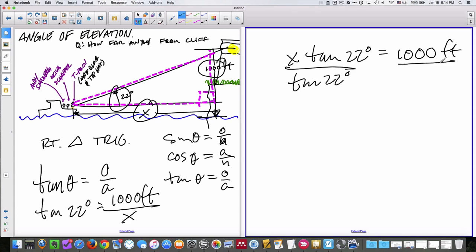Divide both sides by tangent 22. Why? Because tangent 22 is simply a number, the ratio of the opposite leg divided by the adjacent leg for a 22-degree angle. And we will get X equals 1,000 feet divided by tangent of 22 degrees.